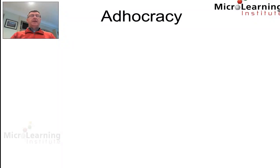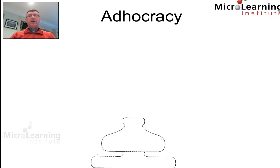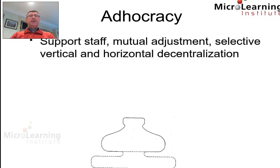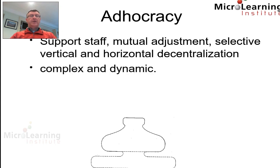The final model Mintzberg identifies is what he calls an adhocracy. Here we can see how he drew it — it features some support staff and uses mutual adjustment with selective vertical and horizontal decentralization.